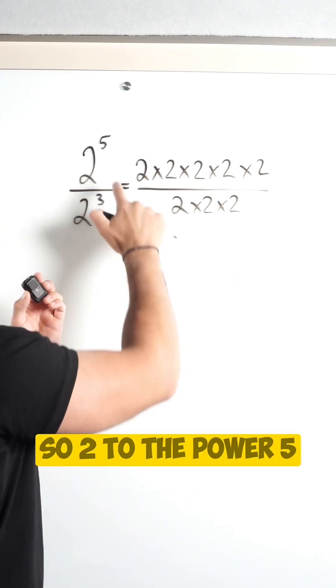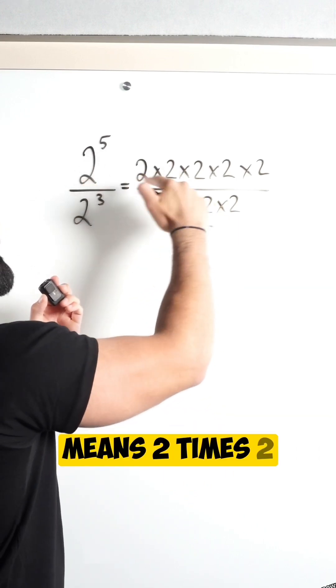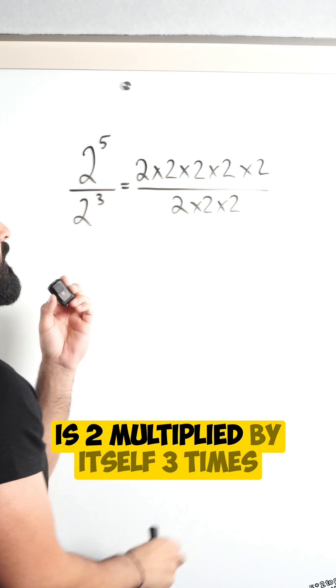Powers means repeated multiplication, so two to the power of five means two times two, five times. Two to the power of three is two multiplied by itself three times.